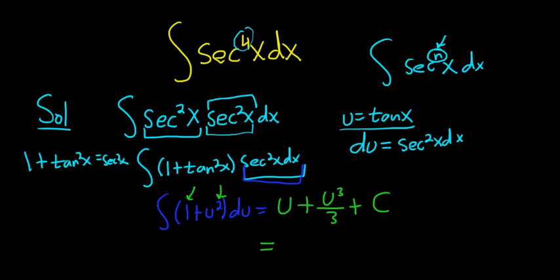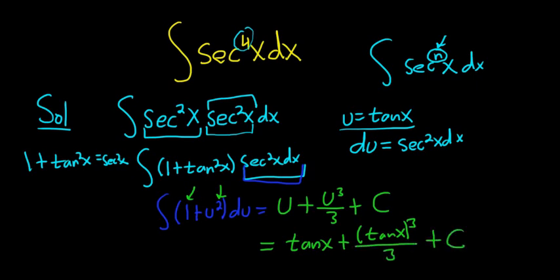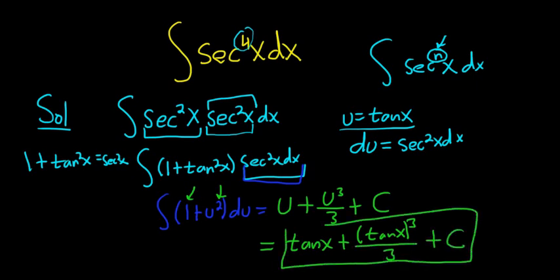The last step is to replace all of the u's with tangents. This would be tangent of x plus tangent of x cubed over 3, plus our constant c. That's it.